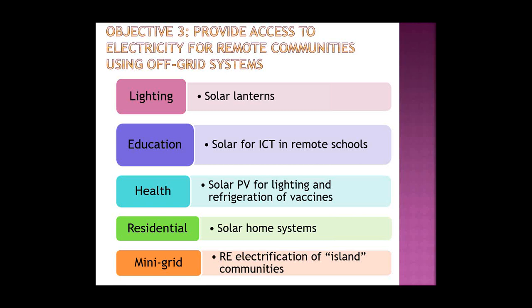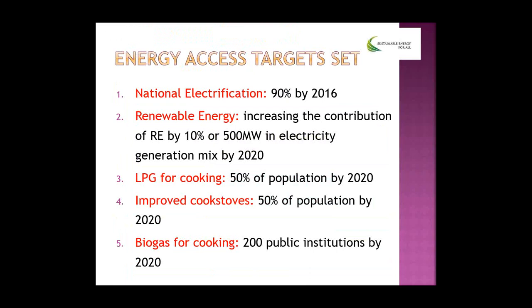For access to electricity for remote communities using off-grid systems, we are looking at technologies for lighting, education using ICT in remote schools, health applications, solar heating, and utilization of medical facilities. Solar systems for residential areas, especially island communities or areas unlikely to be reached by grid electricity, are a priority. Ghana's targets include achieving 90% national electrification by 2016, increasing renewable energy contribution by 10% of total electricity generation by 2020, and having 50% of the population using LPG as their main cooking fuel by 2020.